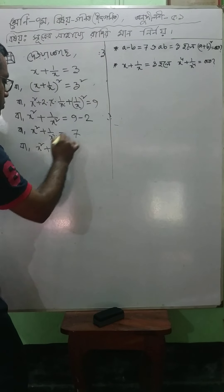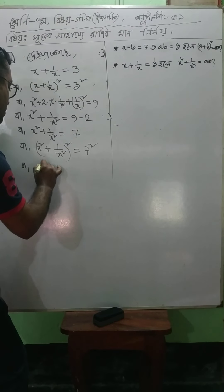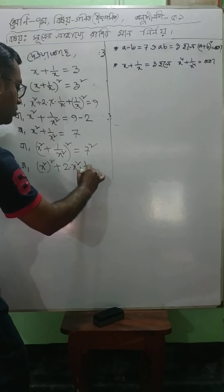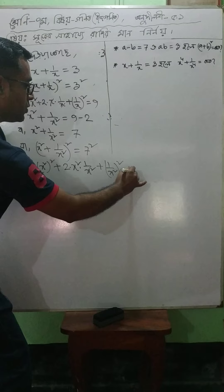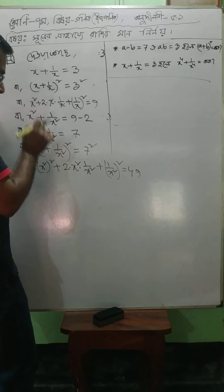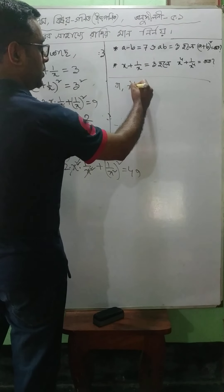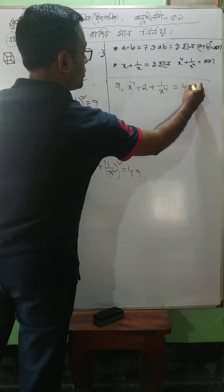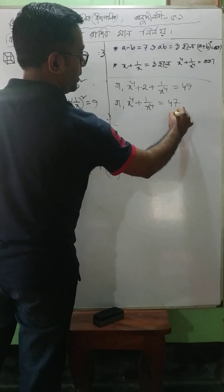So, x squared plus 1 by x squared is equal to 7. So, x squared plus 2 times x squared times 1 by x squared, plus 1 by x squared, whole square is equal to 49. This is x squared squared, which is x to the power 4, and we subtract 2, plus 1 by x to the power 4 equals 49. So, x to the power 4 plus 1 by x to the power 4 equals 47.